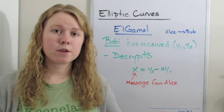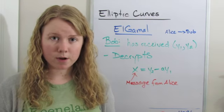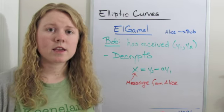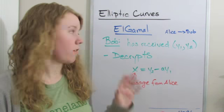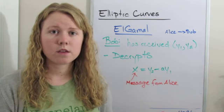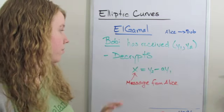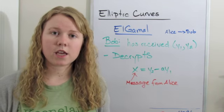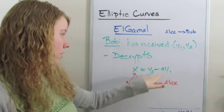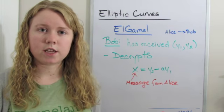To recap, Bob sets up a system with both public and private numbers. And then Alice uses the public numbers of Bob's to send Bob a message. And then after Alice sends Bob the message, Bob uses his private numbers, the a, to get the message that Alice was trying to send him.